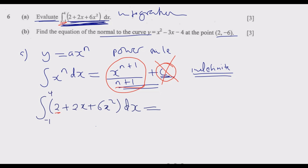We start with the first term. The constant 2 is the same as 2x to the power 0, then plus 2x to the power 1, then plus 6x squared, all with respect to x.